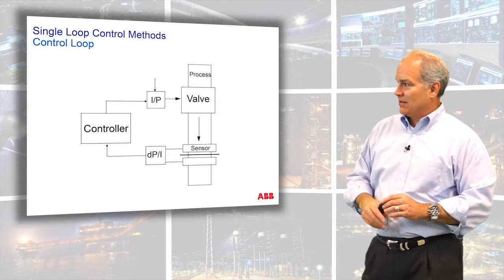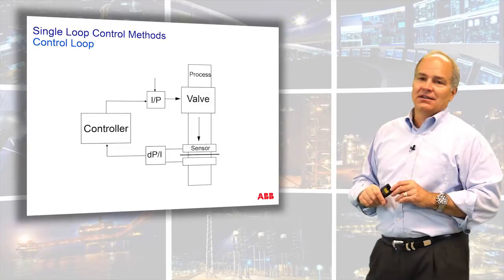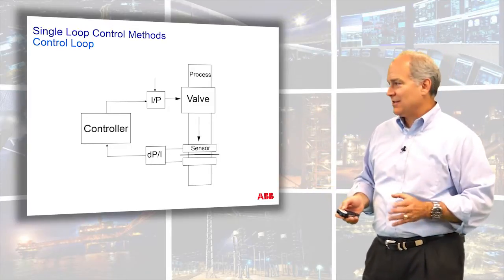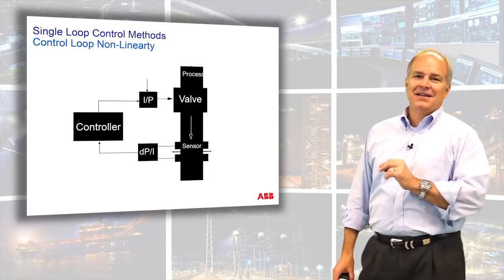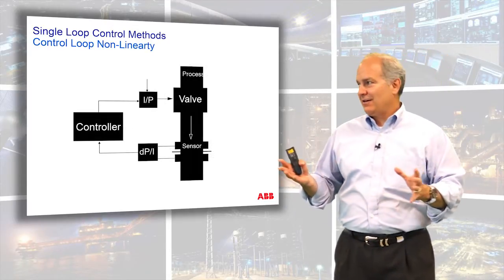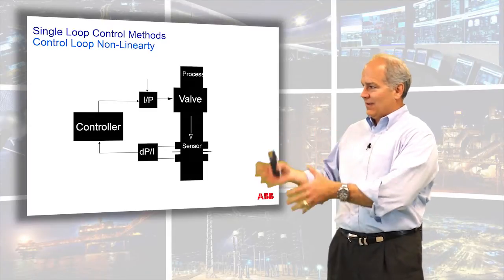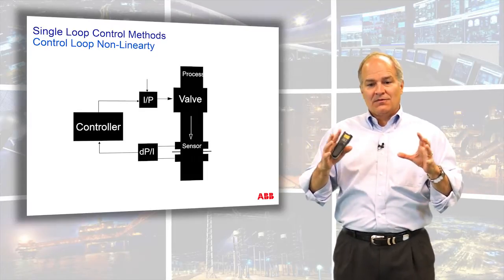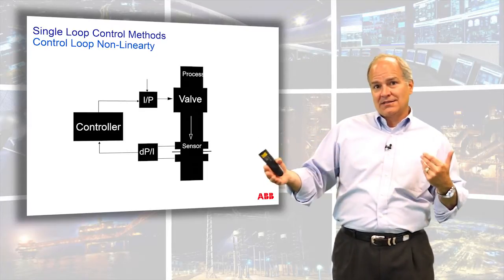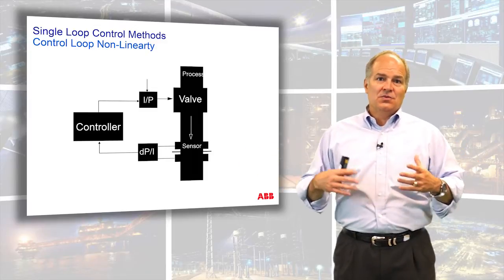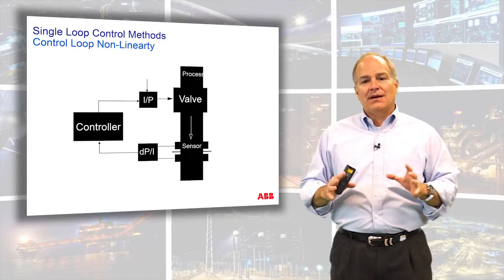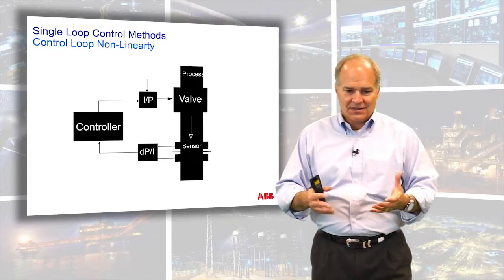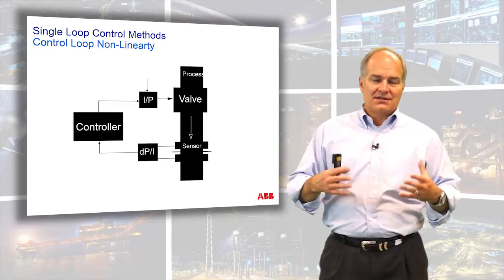In any one of those processes. What I want to do is shade in the areas where nonlinearities can occur. Can they occur in the controller? Everywhere — they can show up. Nonlinearities can show up in the controller, the process, the I2P, the valve, the sensor. And these are those question marks that we talked about. The number of unknowns in your process dynamics is really unlimited.